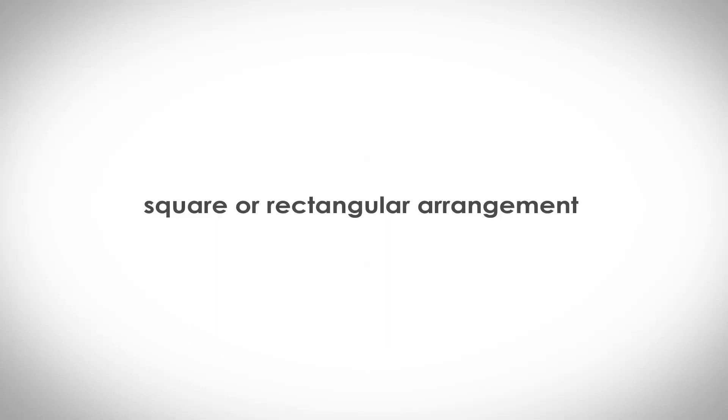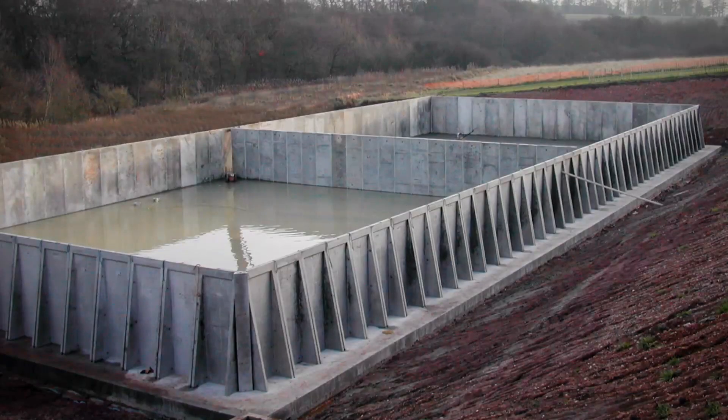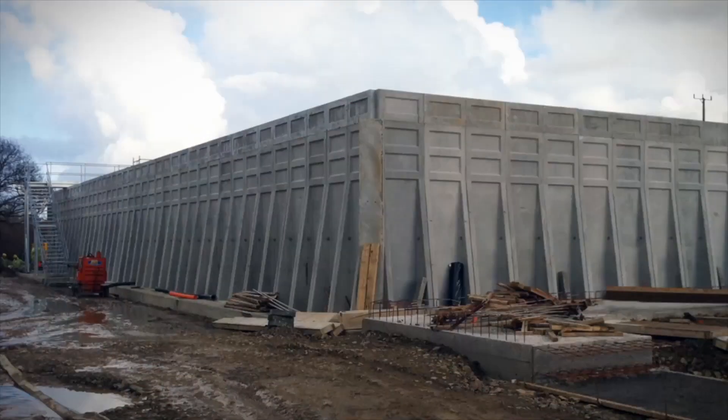Sealwall also has the ability to be installed in a square or rectangular arrangement and, when used in conjunction with our beams, columns and roof panels, can even be covered.